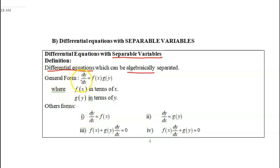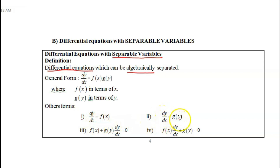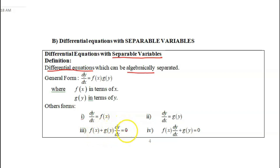This differential equation in general form can also be written in other forms. For instance, dy over dx equals f(x), in which we can separate dy with respect to f(x)dx. The second pattern is dy over dx equals g of y, where we can move g(y) to the left-hand side and dx to the right side and still separate the variables. The third pattern is f(x) plus g(y) times dy over dx, where we can move f(x) to the right side and continue separating y and x as in the first and second patterns.